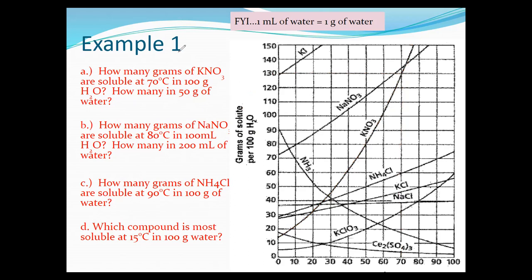How many grams of NaNO₃ are soluble at 80 degrees in 100 milliliters? Find the 80-degree mark and draw a line up to the NaNO₃ curve. We're looking at about 143 grams — not quite halfway between marks; halfway would be 145, so about 143 grams of NaNO₃ will dissolve at 80 degrees in 100 milliliters of water.